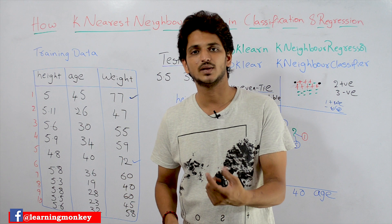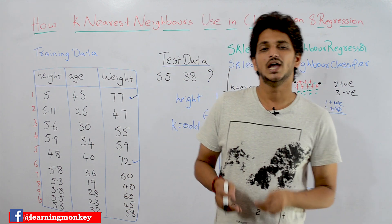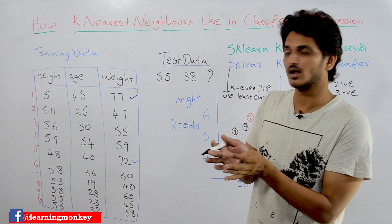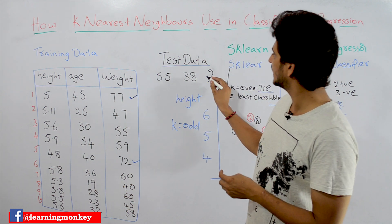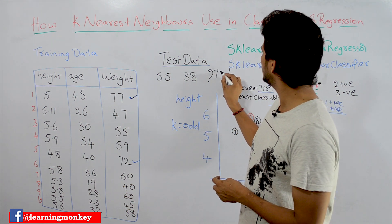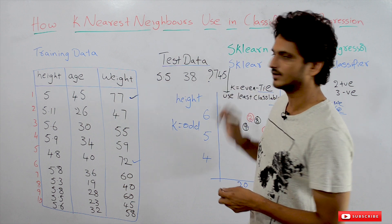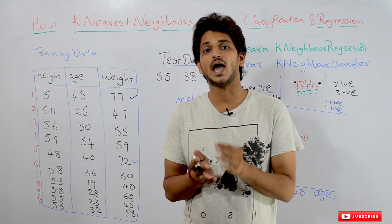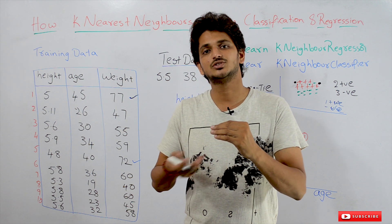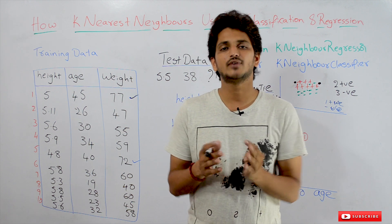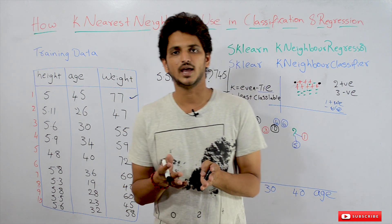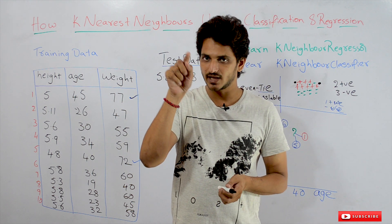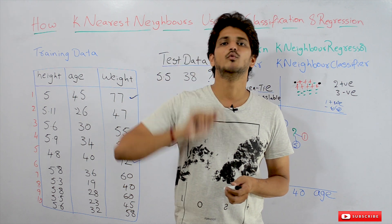The average of 77 and 72 is (77 + 72) / 2, which comes to 74.5. So the prediction of KNN here is 74.5. If k is equal to 5, it will pick the 5 nearest neighbors and take the average of those weights. That is how K-Nearest Neighbors works on regression models.